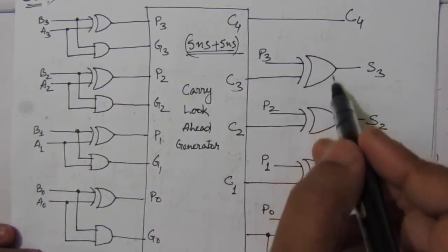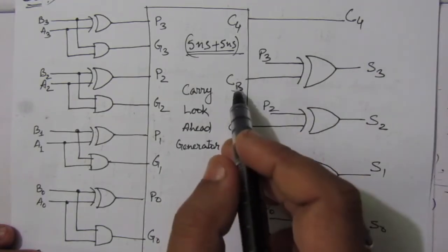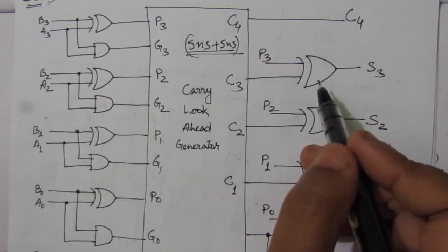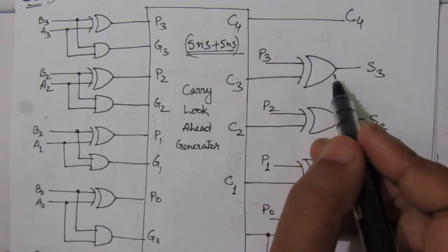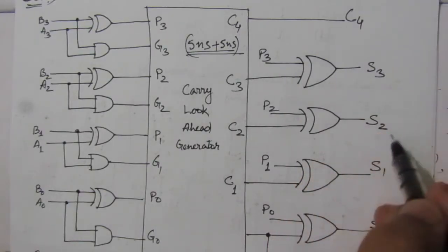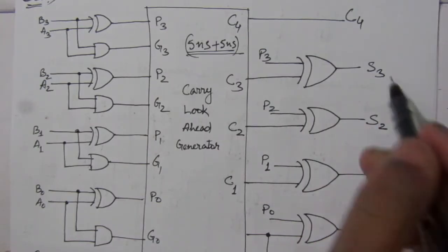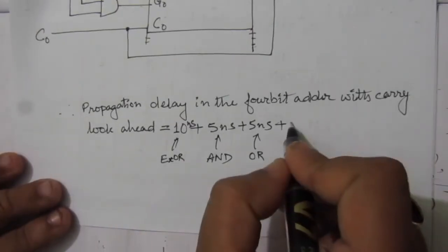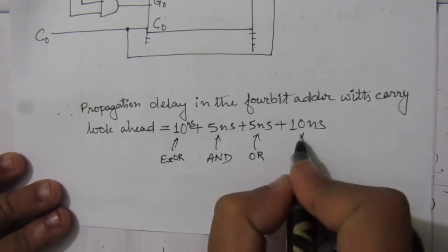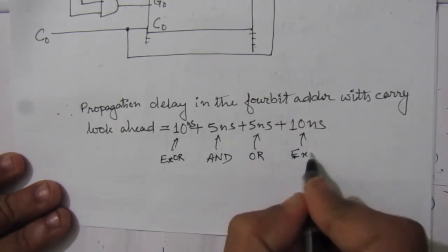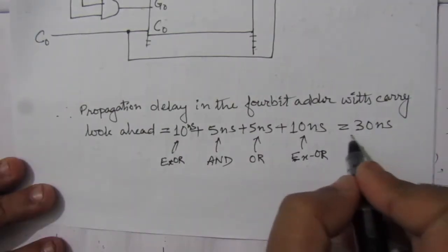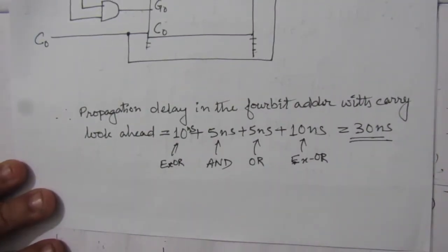After getting C3, C2, and C1, we can see there is another stage of XOR gates. We have to wait another propagation delay of 10 nanoseconds for this XOR gate. After this 10 nanoseconds of propagation delay, we will get outputs S3, S2, S1, and S0. So we have to add another 10 nanoseconds, giving us a total of 30 nanoseconds of total propagation delay. This is the solution to the problem.